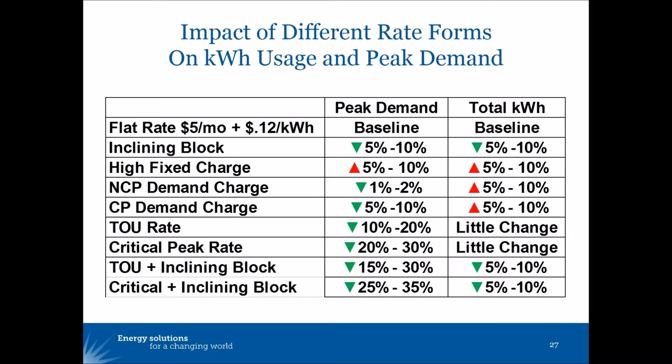The time of use rates by themselves achieved a significant reduction in peak demand but little change in energy usage. The combination of TOU plus inclining block or critical peak plus inclining block produced both very significant peak demand reductions and quite significant total energy reductions.